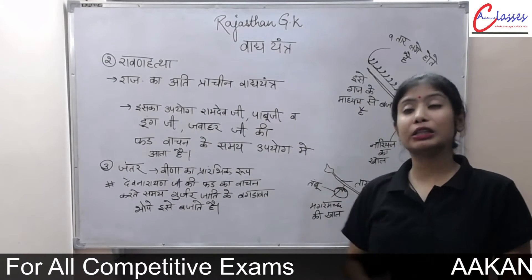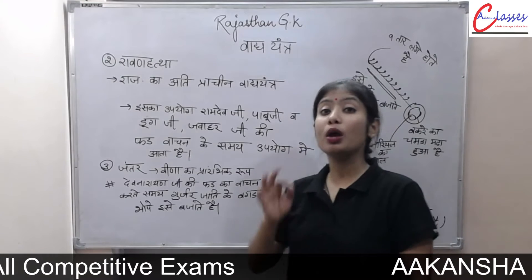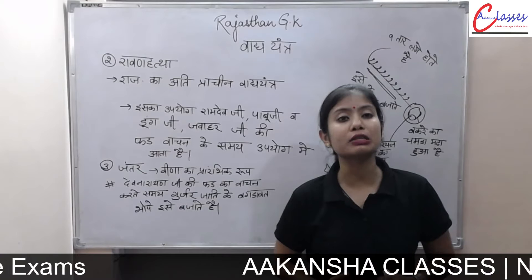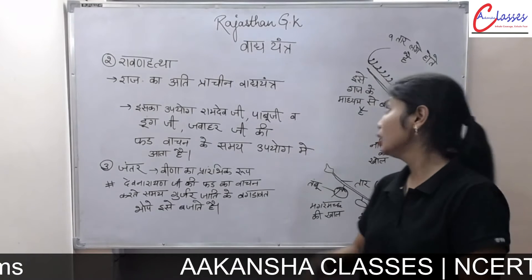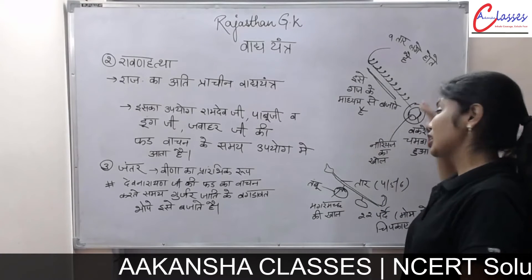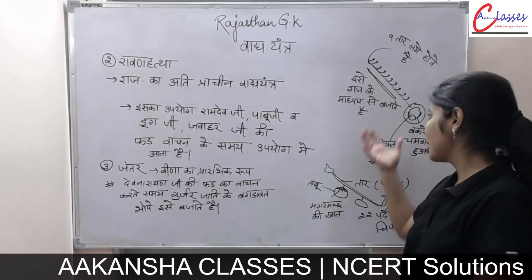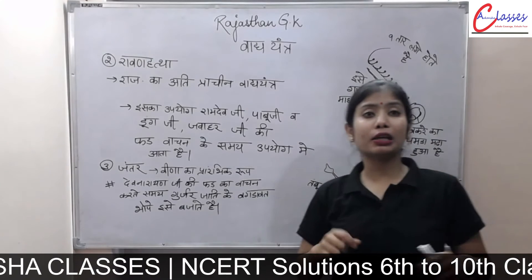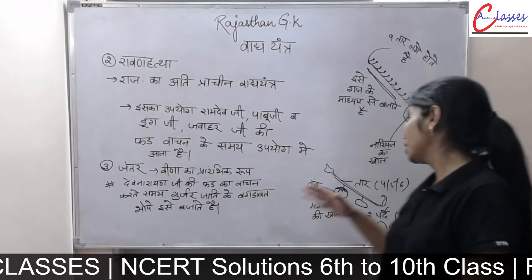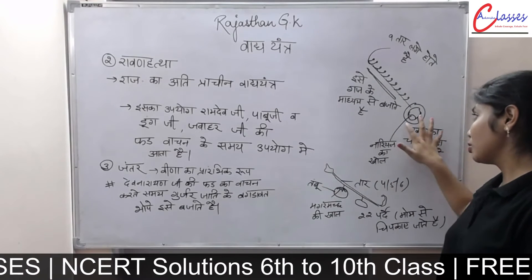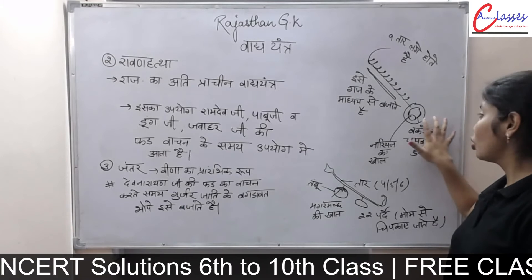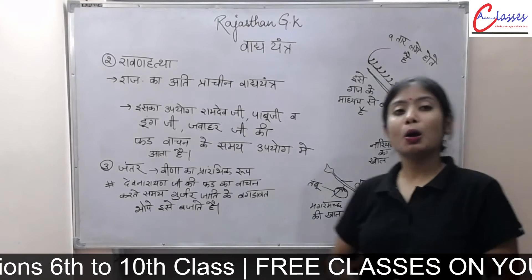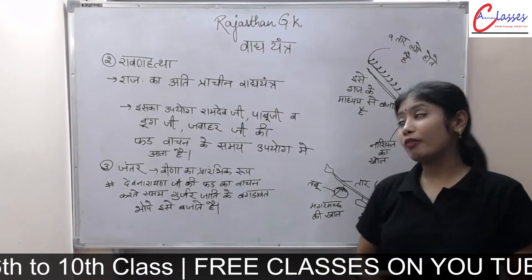Rajasthan's greatest Tattwa Vadya Yantra is associated with Ram Dev Ji, Pabu Ji, Doom Ji, and Jawaad Ji. If you talk about it, there is a normal diagram — it is a large Tattwa Vadya Yantra that can spread widely, and it has a natural form, opened and kept in a pot.